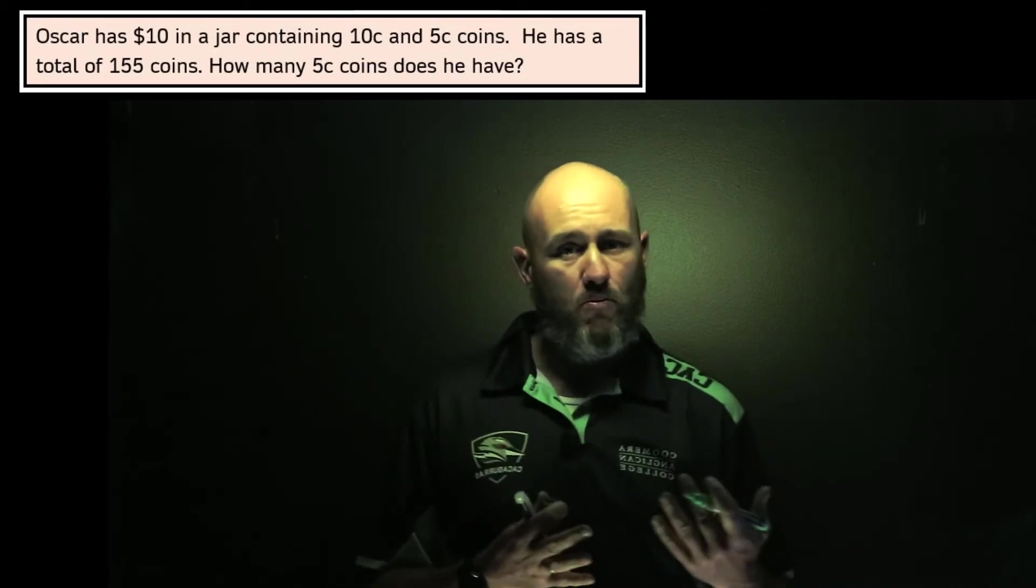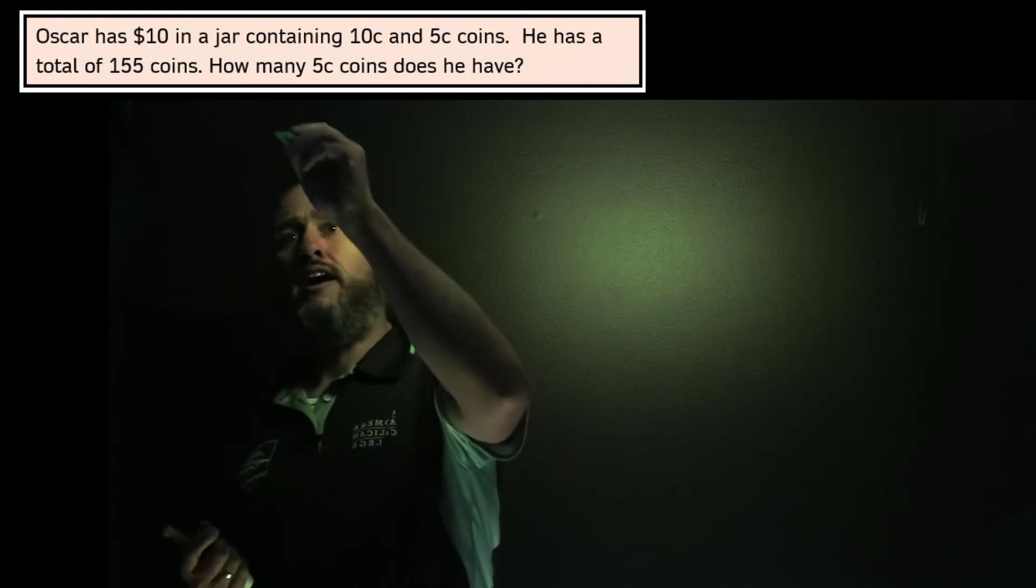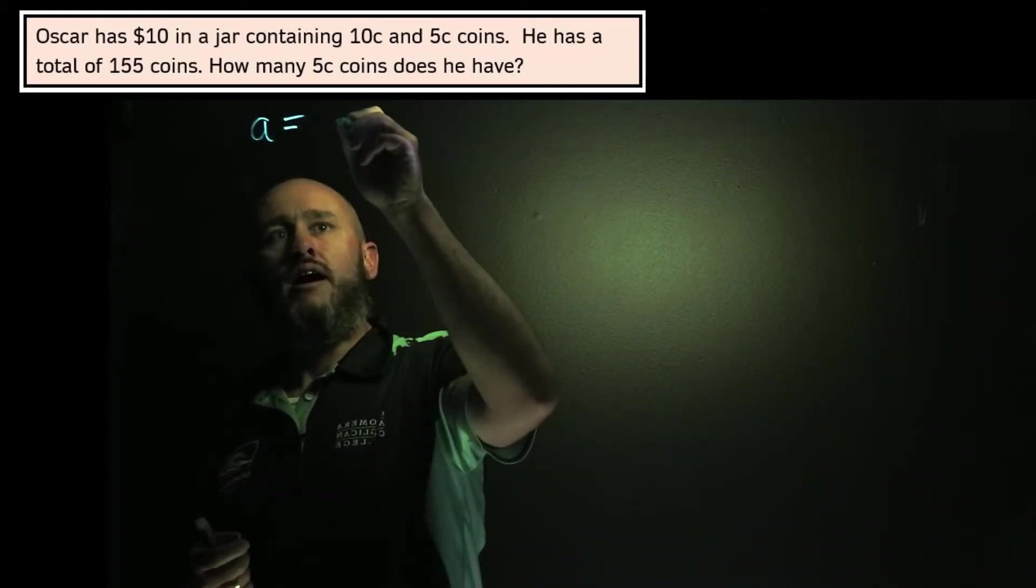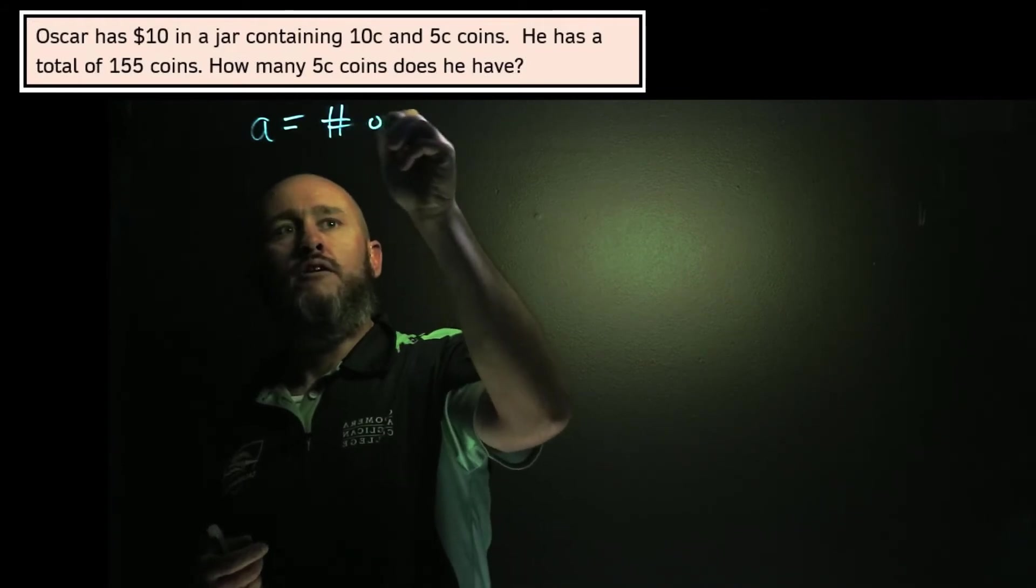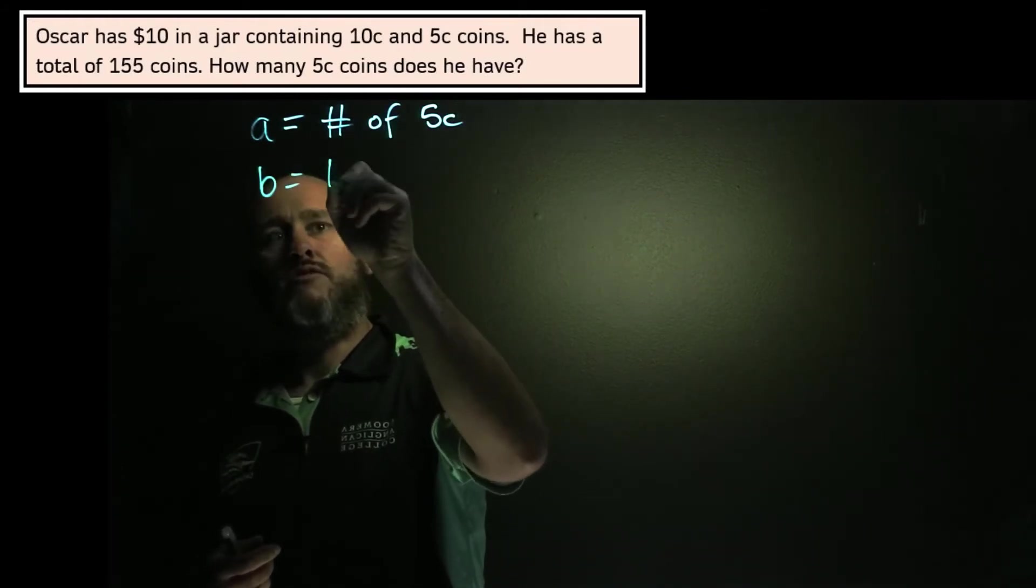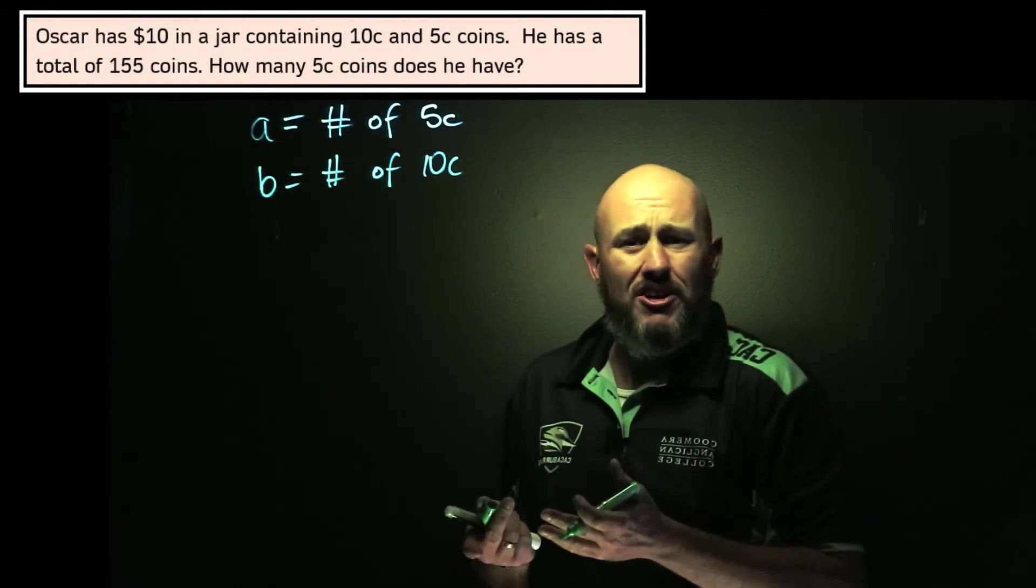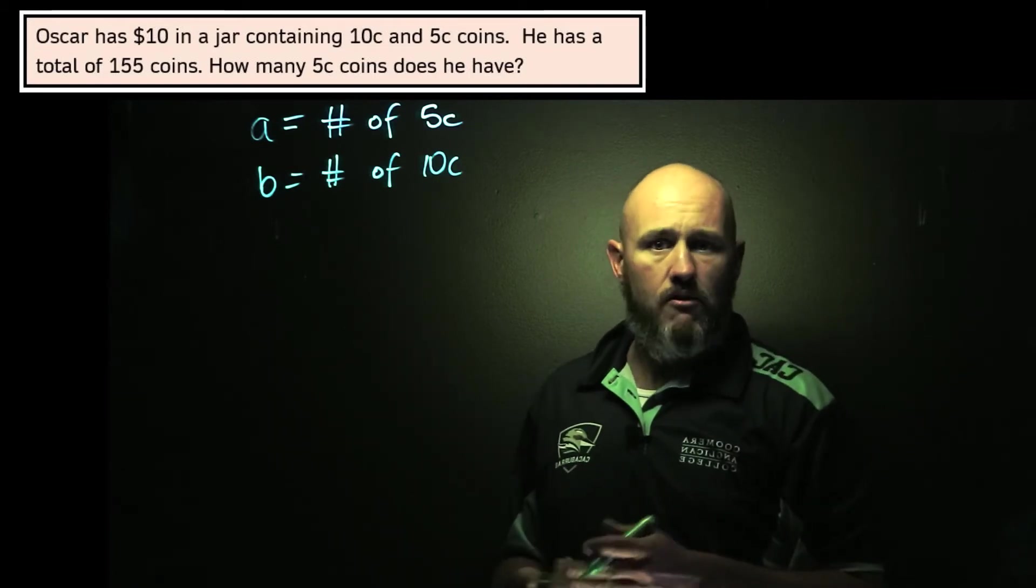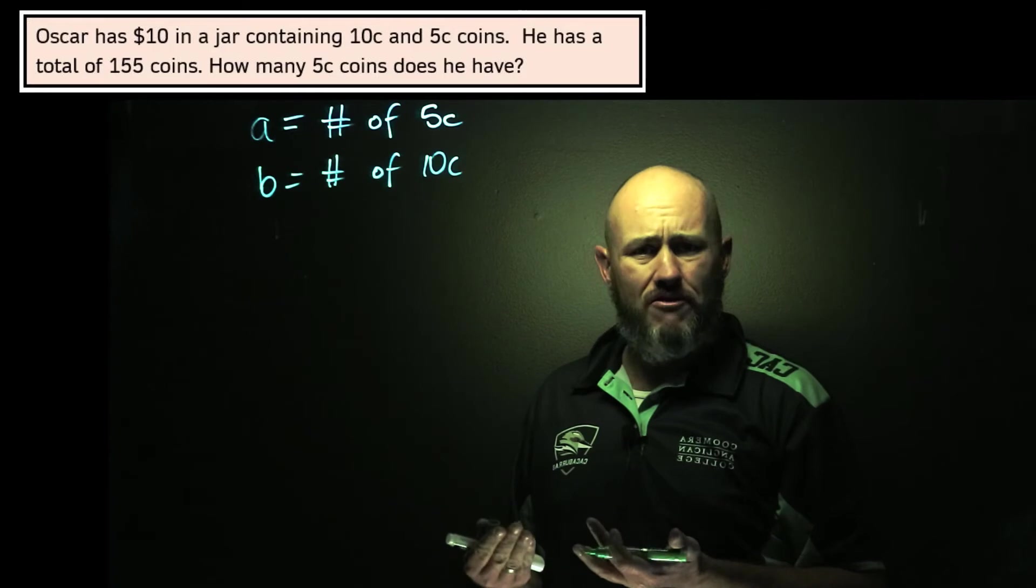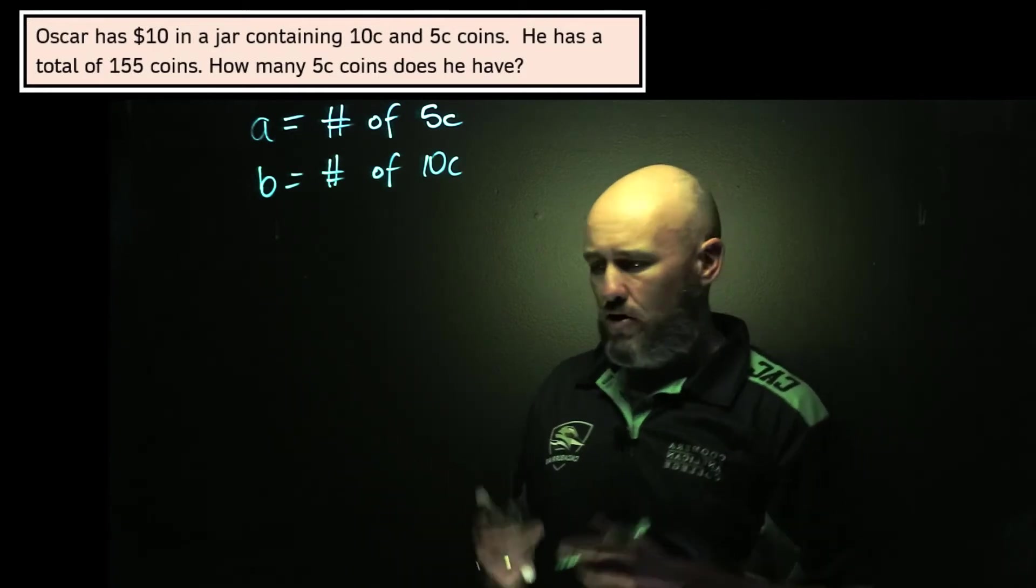What we have to do, unlike the other shopping problem where we defined x and y as the cost in dollars, now we're defining variables. This time, just for a bit of fun, I'll call them A and B. A is the number of 5 cent coins, and B is equal to the number of 10 cent coins. So you need to really stop and think about what you don't know. I know the value of a 5 cent coin. It's 5 cents. So I don't need to know a monetary value. What I don't know is how many of each I have.